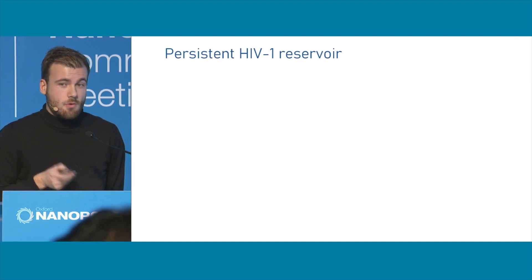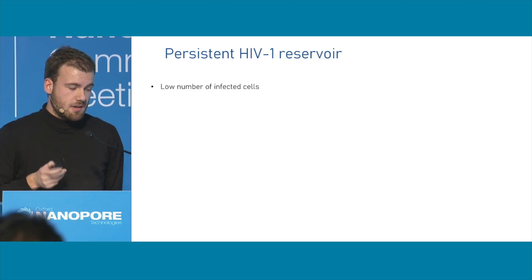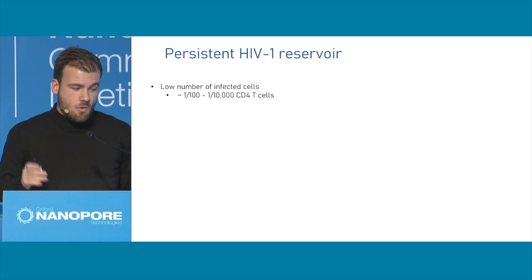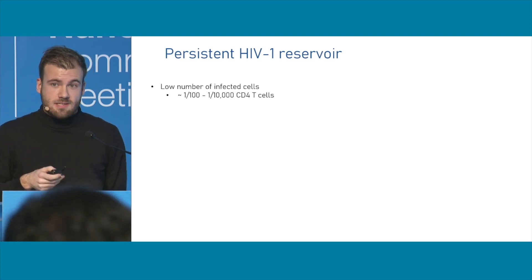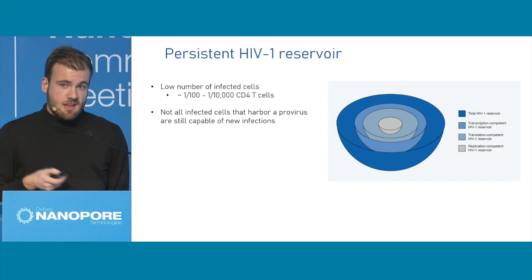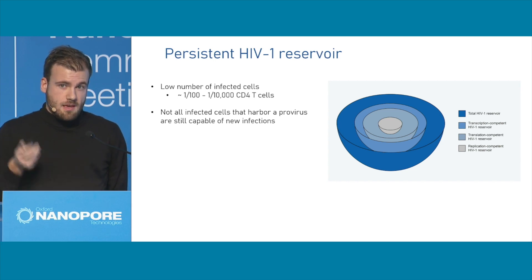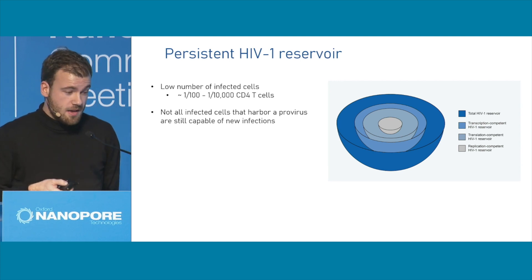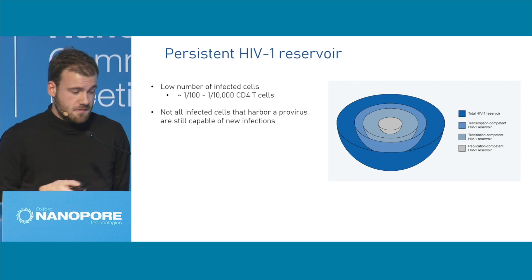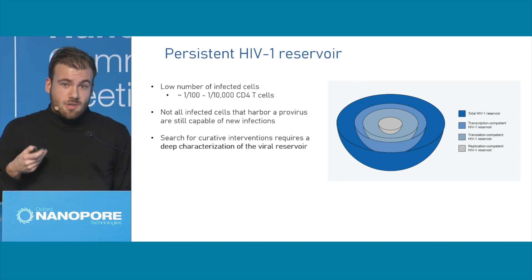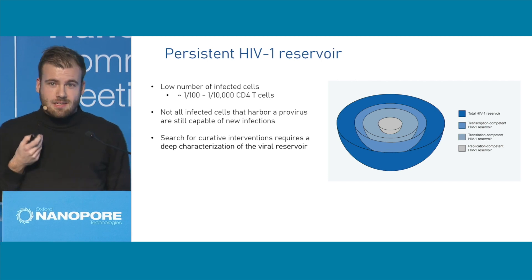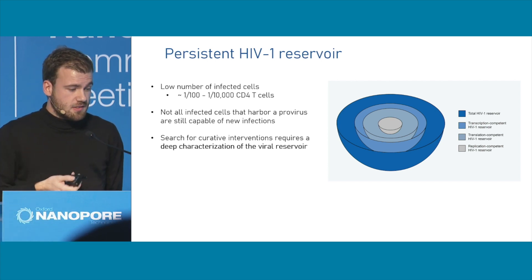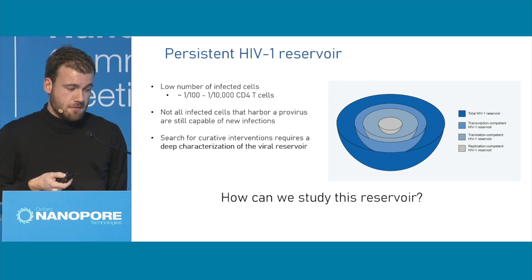This is due to the existence of a very low number of infected cells that are able to persist, called the HIV-1 latent reservoir. This persistent reservoir is a really scarce number of cells — we're talking about around 1 in 100 to 1 in 10,000 infected CD4 T cells. To make it even more complex, not all of these infected cells are actually relevant. Each infected cell will carry a different HIV-1 variant, and most of them will be defective.